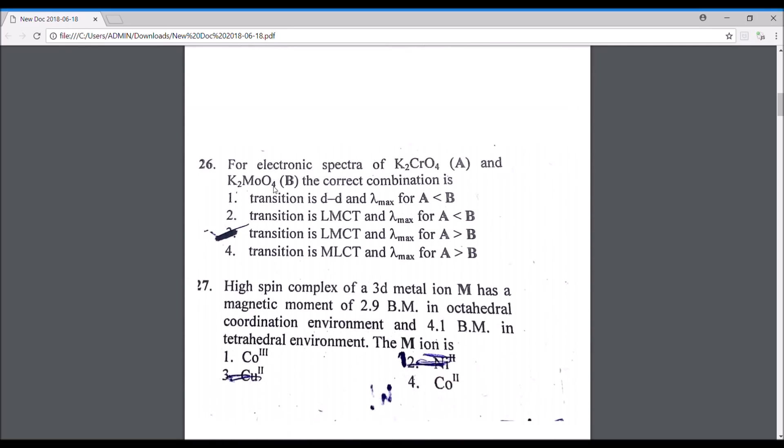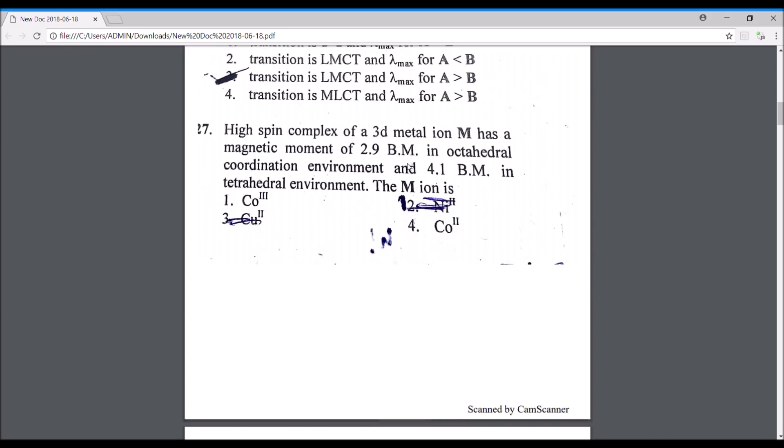This particular question I've already discussed in my charge transfer video. For electronic spectra of K2CrO4 and K2MoO4, the correct combination is: chromium is in +6 oxidation state, that is its highest oxidation state, so definitely it's going to be ligand to metal charge transfer. Lambda max is greater for 3d than 4d metals because molybdenum is 4d and chromium is 3d. The HOMO to LUMO transfer in 3d metals is small, so the energy transfer is small, and if energy is small then lambda max is higher.